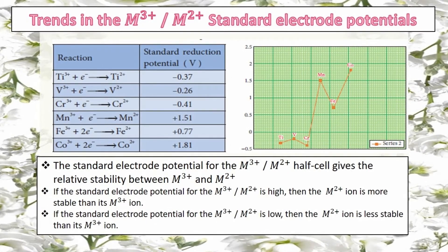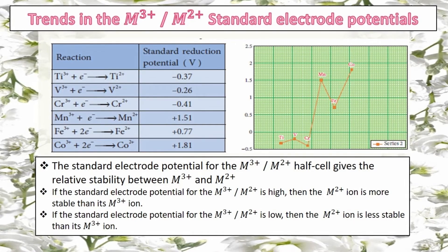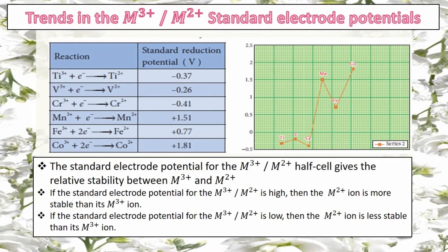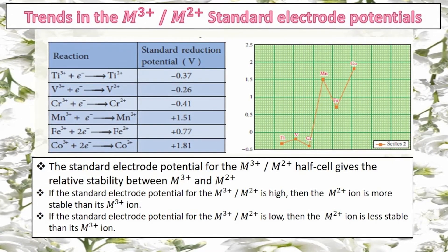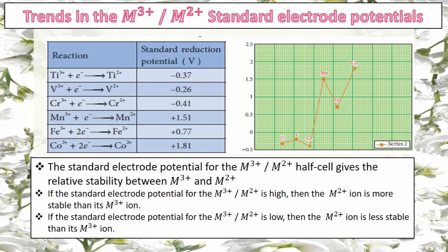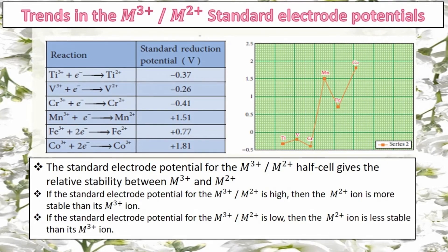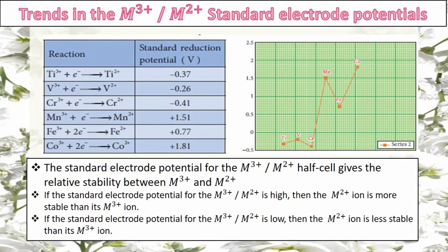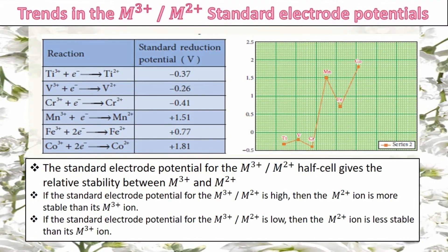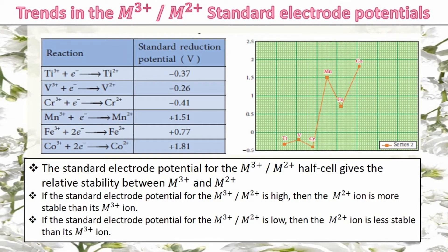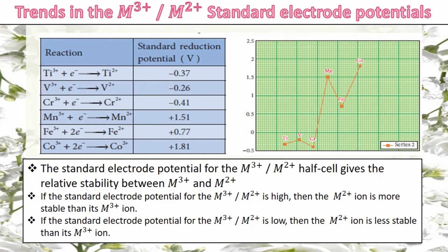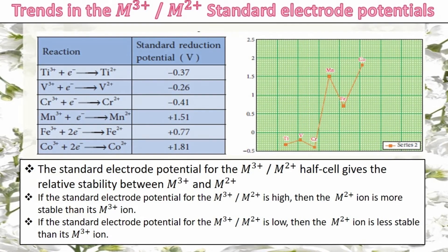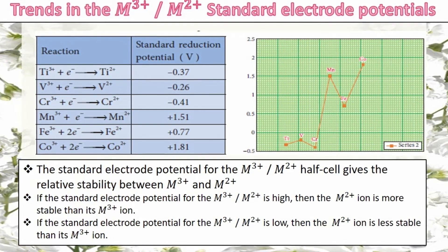Now we will learn about trends in M³⁺/M²⁺ standard electrode potentials. Based on the E° value of M³⁺/M²⁺, we can determine whether the metal 3+ ion or metal 2+ ion is more stable. If E° of M³⁺/M²⁺ is very high, then M²⁺ is more stable. If E° of M³⁺/M²⁺ is low, then M³⁺ is more stable.